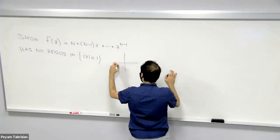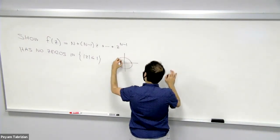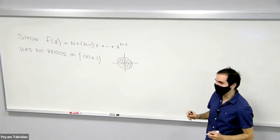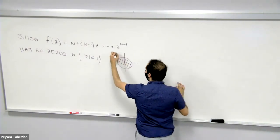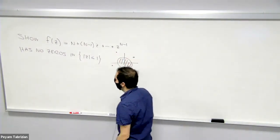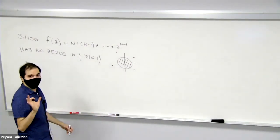In other words, if you consider the unit disc, the complex numbers with absolute value less than or equal to 1, then it turns out the root of this must be outside. And the trick is quite clever.